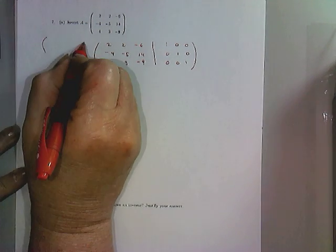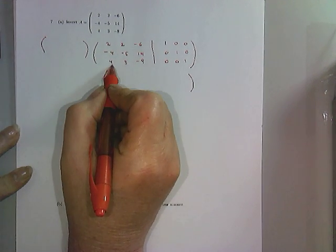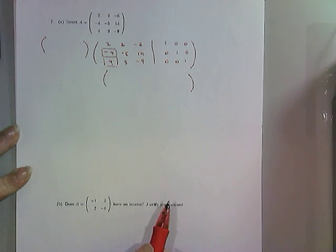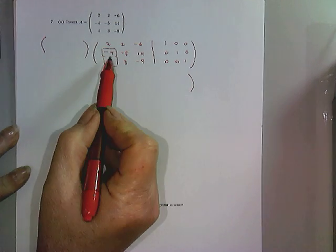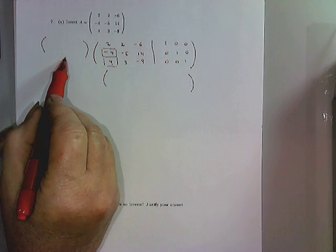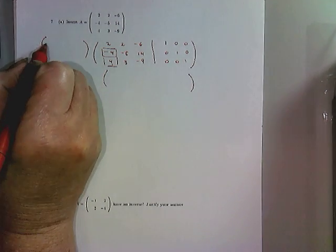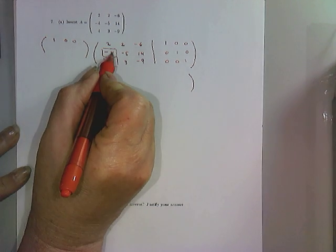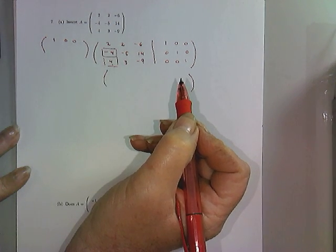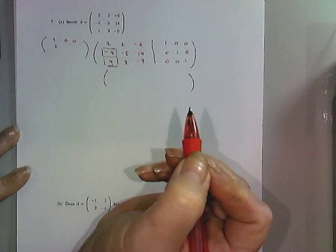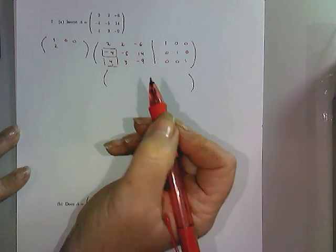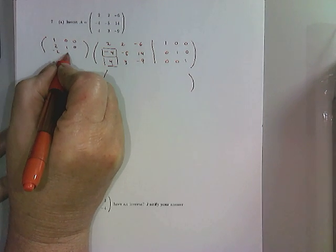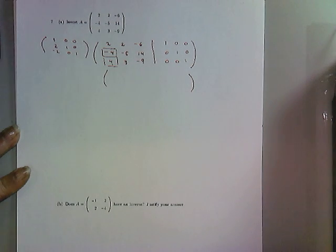The first thing I'm going to do is zero the entries below the diagonal in the first column. We find the multipliers and come up with the Gauss transform that will do this. In this particular case it's going to be 1, 0, 0. The multiplier here is negative 2, so we'll have a 2 below the 1 here, and the multiplier here is 2, so this will be negative 2. And that's our Gauss transform.